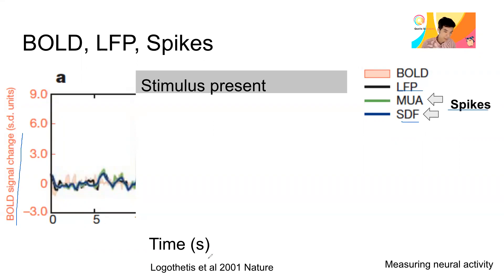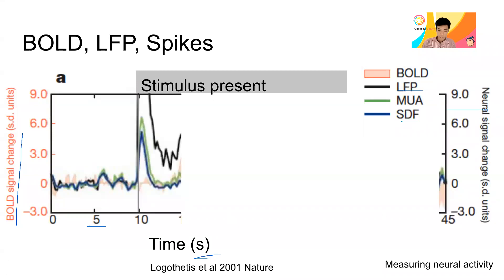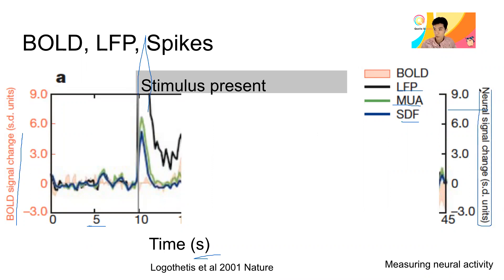In units of seconds, a stimulus was presented starting at time 10 in the figure. At the onset of the stimulus, all measures of neural activity — LFP, multi-unit, and single spike density function — increase a lot. The LFP response is so large it goes off the scale. It's a signal change in standard deviation units, so it's a really huge response for LFP. Multi-unit and spike density function also go up hugely, and then go down quickly.